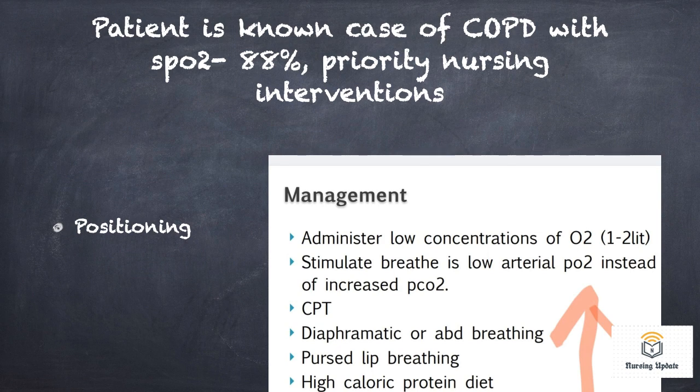Patient with COPD has SPO2 of 88%. You should not increase oxygen in a COPD patient. The answer is positioning — adjust the patient's position to improve oxygenation.